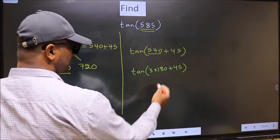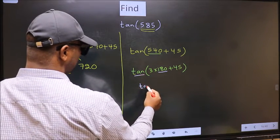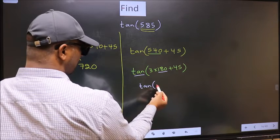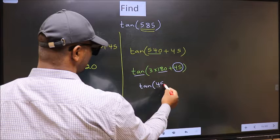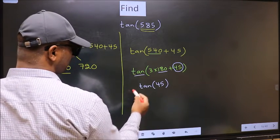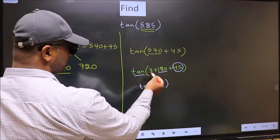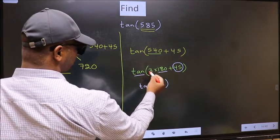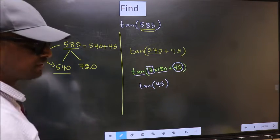Next, here we have 180. So, tan is not going to change. It will remain tan. And inside, we get this angle 45. Now the question is, will we get here plus or minus? To answer that, we should look at the number before 180. That is 3. And 3 is odd.